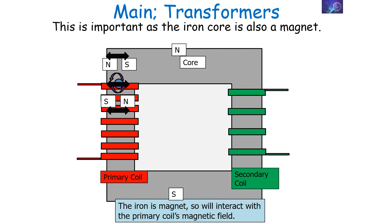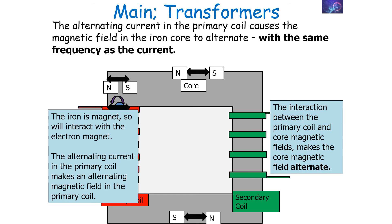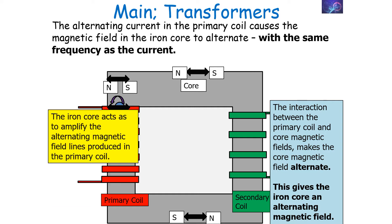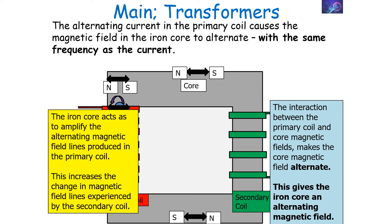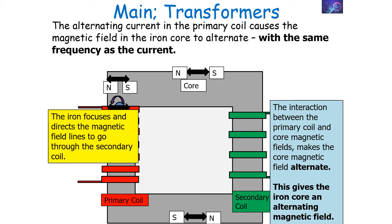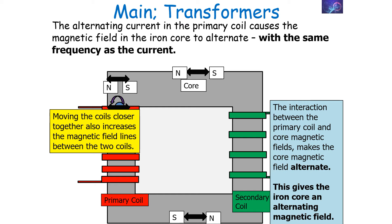Because the iron core is a soft magnet, it interacts with the primary coil's magnetic field — it is attracted and repelled by the alternating magnetic field. This makes the iron core have a magnetic field which also alternates at the same frequency as the current going through the primary coil. Crucially, the iron core acts to amplify the alternating magnetic field lines produced in the primary coil, which increases the change in magnetic field lines experienced by the secondary coil and boosts the potential difference induced there. The iron core also directs and focuses the magnetic field lines to go through the secondary coil, ensuring more of the field from the primary coil passes through it.